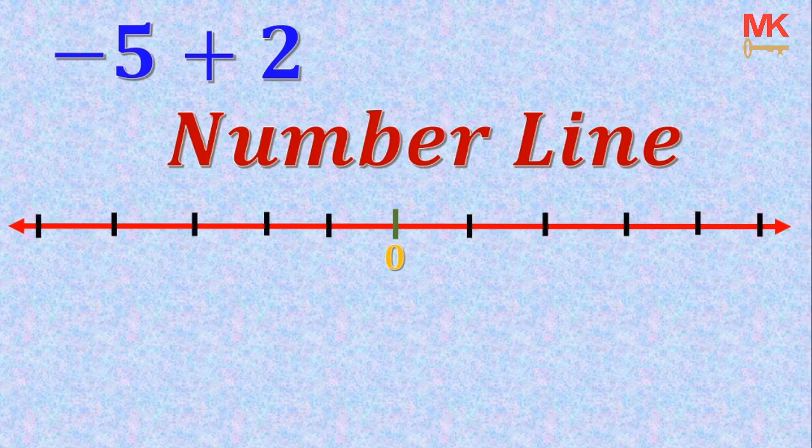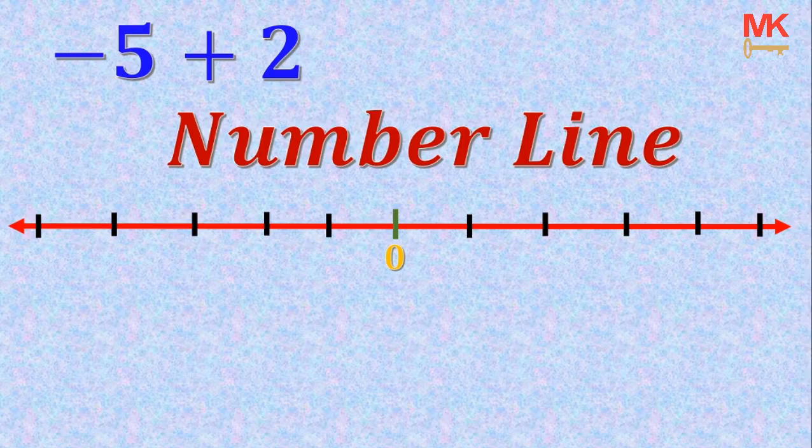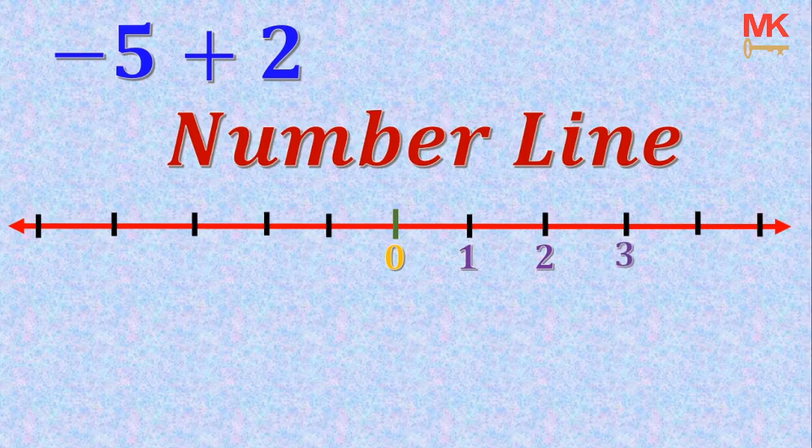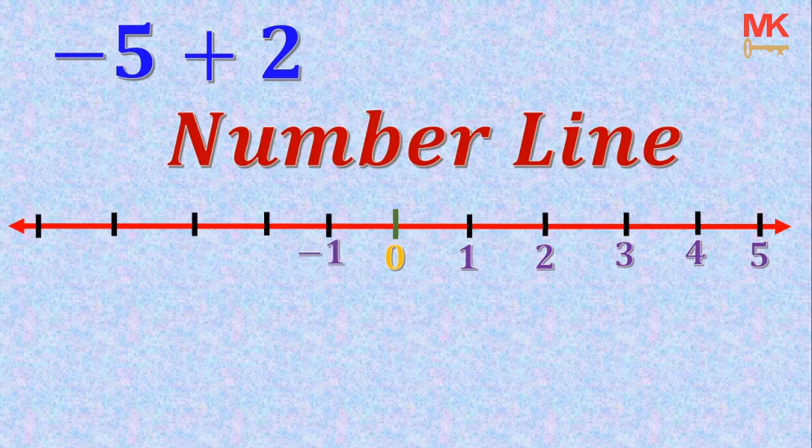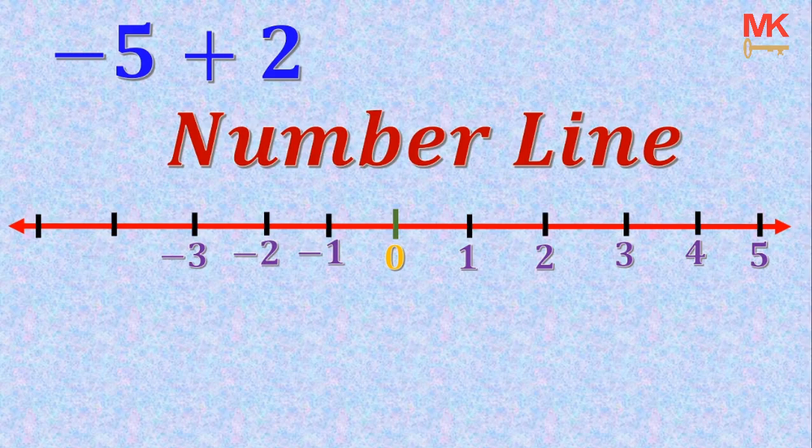So like I said earlier, to the right of the number line are the positive natural numbers. So let's start counting. So we call here 1, 2, 3, 4, 5. Then to the left, we have negative 1, negative 2, negative 3, negative 4 and negative 5.